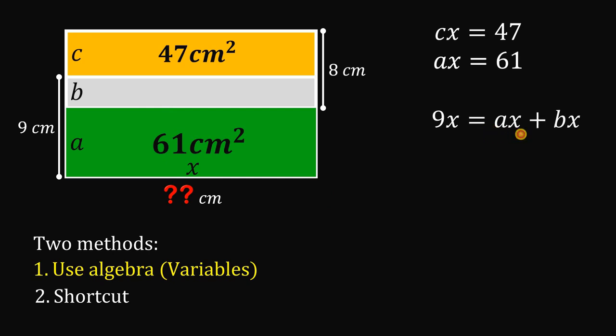Now, notice that we have a value for ax. Ax is given a while ago, which is equal to 61. So, we can replace this ax with 61.